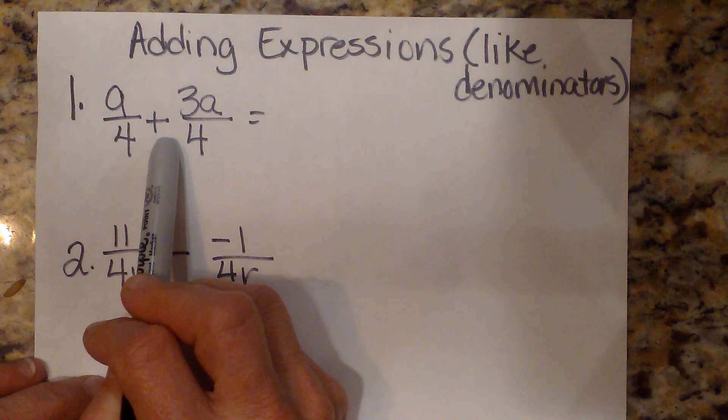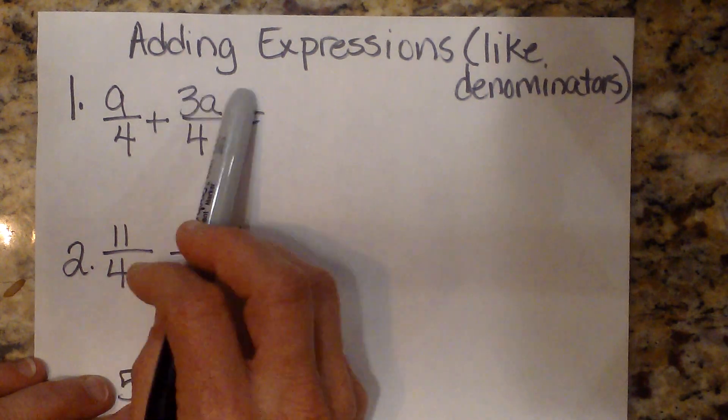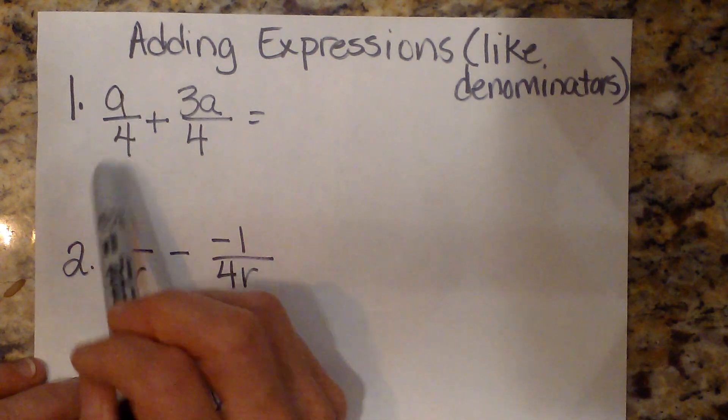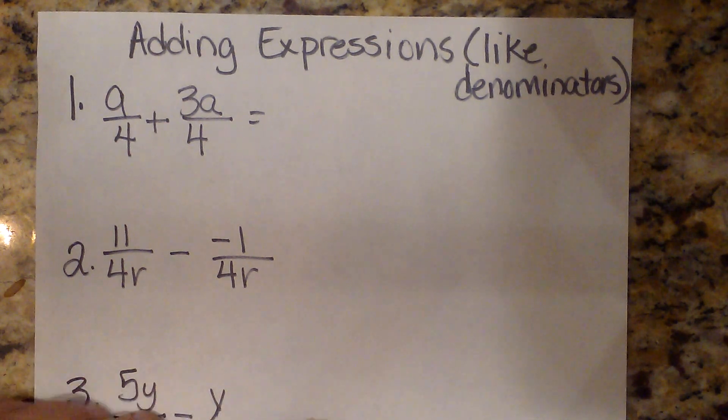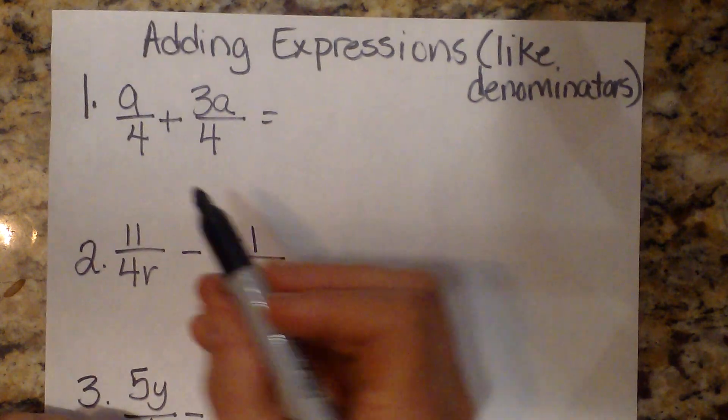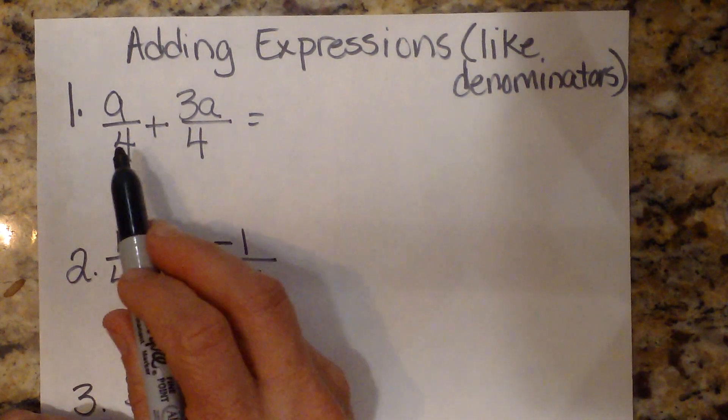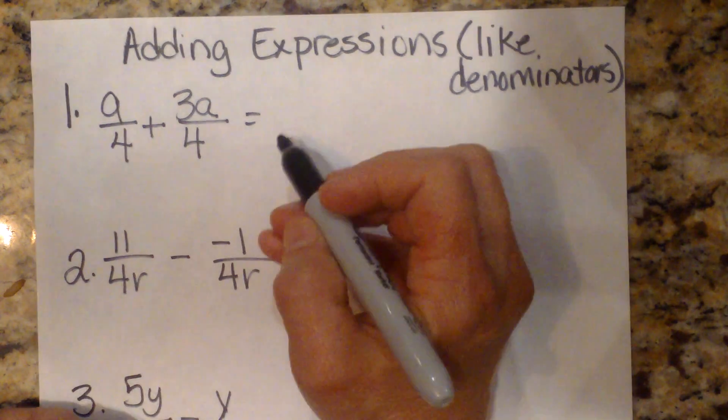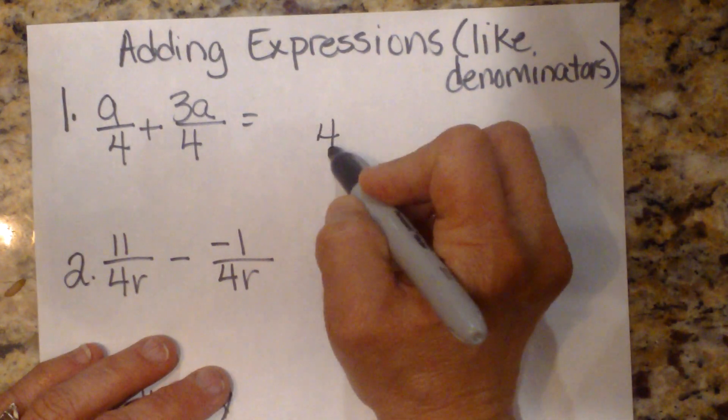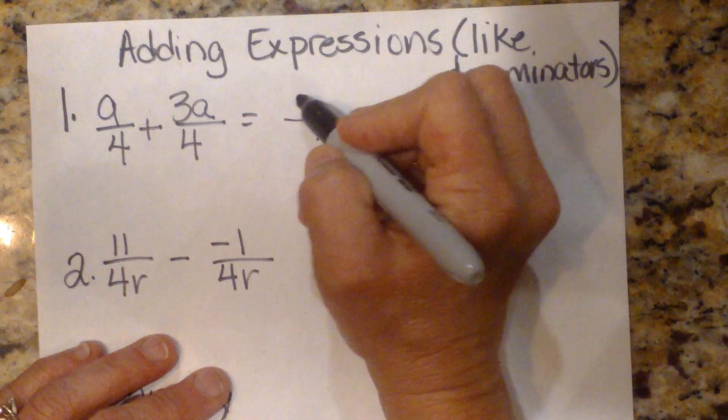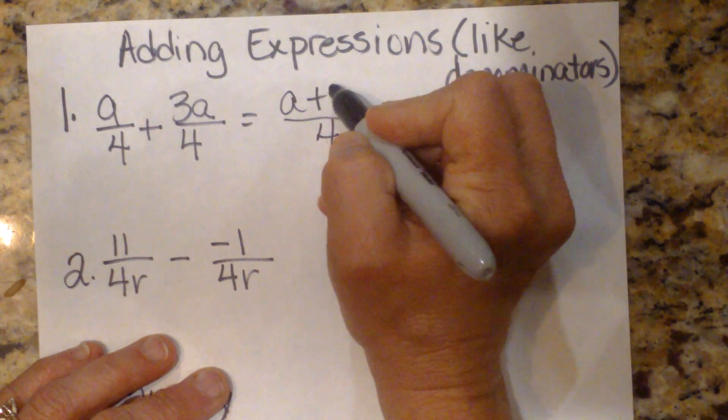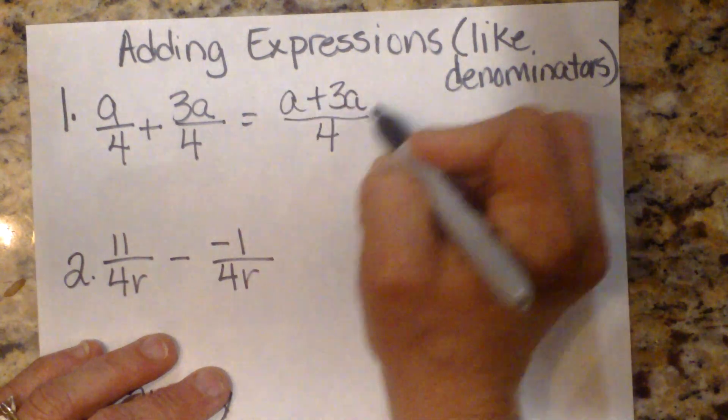We have a over 4 plus 3a over 4. So we're adding basically fractions, but the fractions have a variable in them. All we have to do when you're adding fractions is you have to have a common denominator. Well, these two have a common denominator of 4. So I'm just going to bring my denominator over.